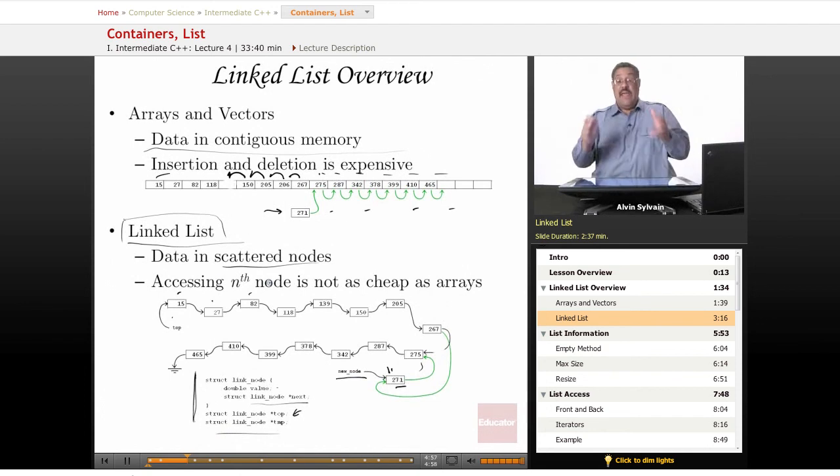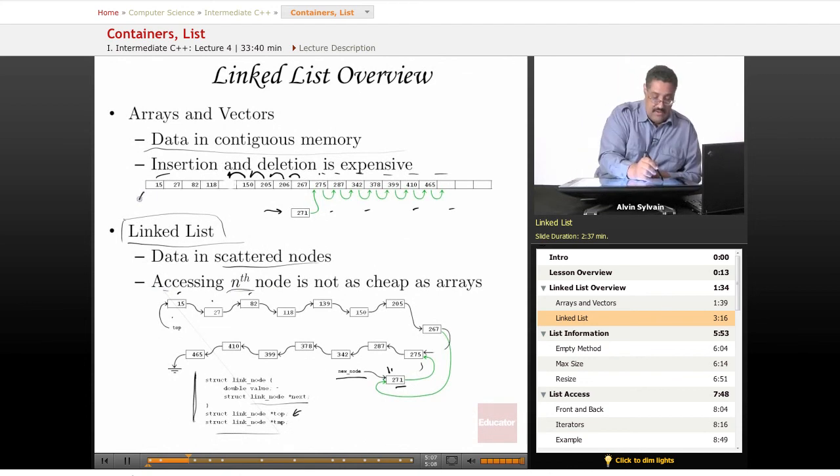But accessing the nth node, there are trade-offs everywhere. If you need to access the nth node, it may not be as cheap as an array. With an array, you've got your pointer to the first spot. I need the 27th node? You take this pointer, add 27 to it, and it points you right to where you want to go.